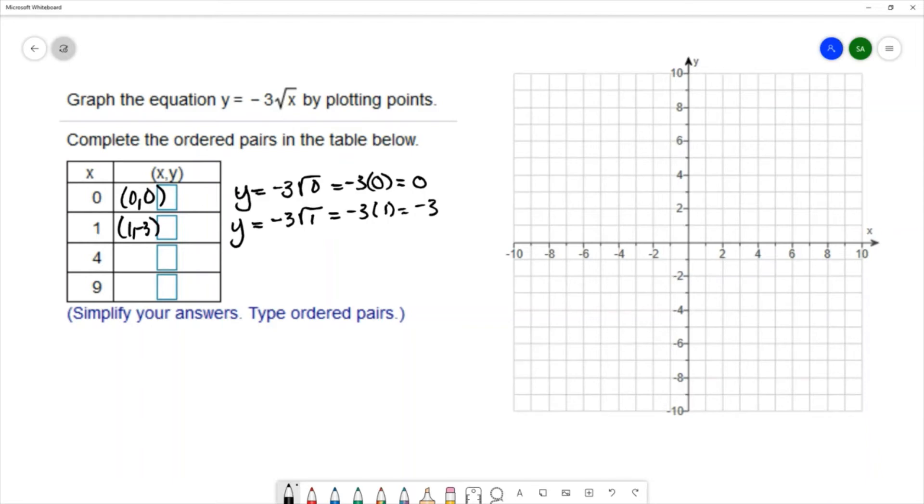For the next x, we have 4, y equals negative 3 times square root of 4. That's negative 3 times 2, because square root of 4 is 2, and we get negative 3 times 2, which is negative 6. And our ordered pair is 4, negative 6. And finally, with an x value of 0, we have y equals negative 3 square root of 9. We can simplify square root of 9 to be 3. We have negative 3 times 3, which is negative 9. So our final ordered pair is 9, negative 9.